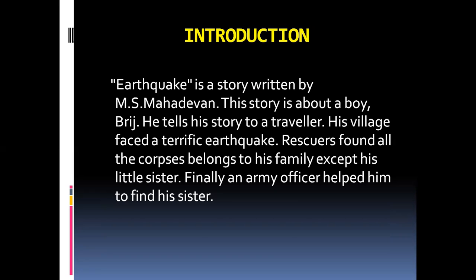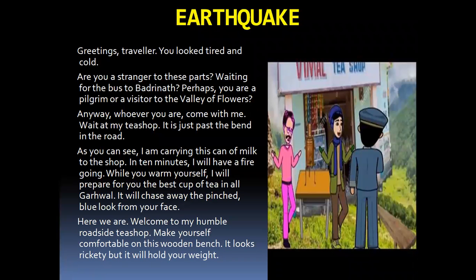The story starts with him telling his story to an unknown traveller. It is like a one-way communication — the author narrates the life history. This boy called Bridge is running a tea shop, and he says that is the best tea you could have in Garvel. He belongs to a different city which was completely destroyed by the earthquake, and now he is in Garvel running a tea shop.